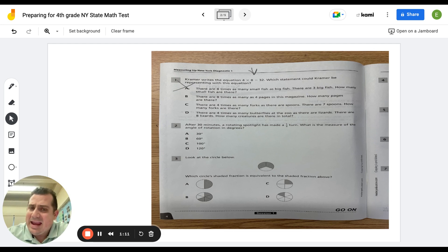I go to B. There are eight times as many as four pages in this magazine. How many pages are there? Well, I do see the eight times, it looks like eight times four. And I know in my problem, it says four times eight, but eight times as many as four would have to be eight times four. So that doesn't match up as well. And C, there are four times as many forks as there are spoons. And there are seven spoons. That would be four times seven, which leaves me with D. There are four times as many butterflies at the zoo as there are lizards. There are eight lizards. How many creatures in total? That matches the four times eight, four times as many butterflies at the zoo as there are lizards.